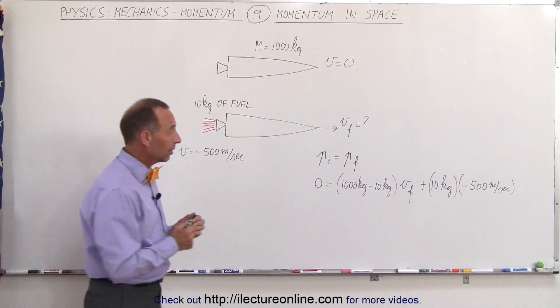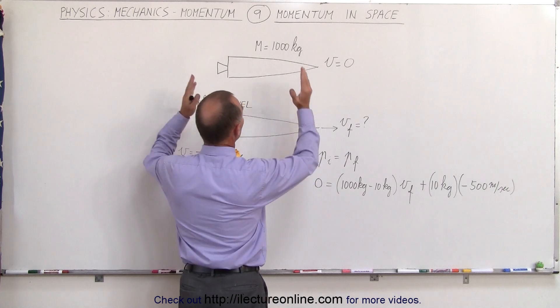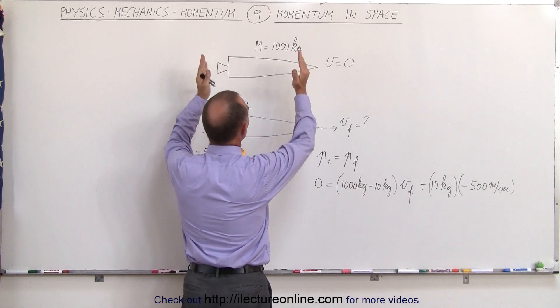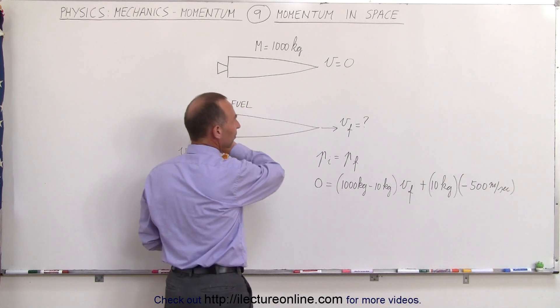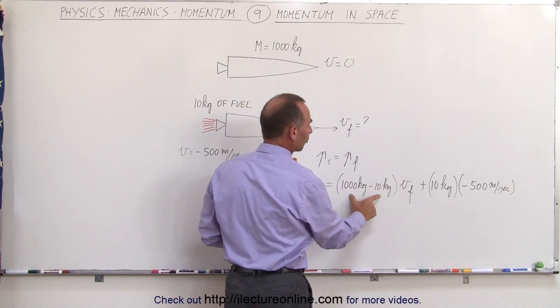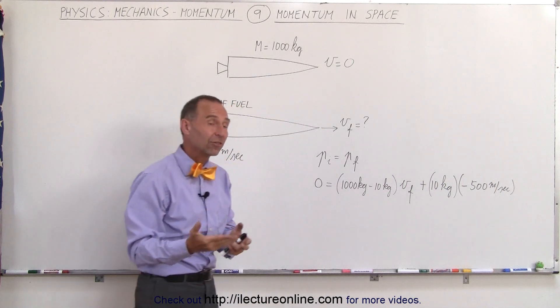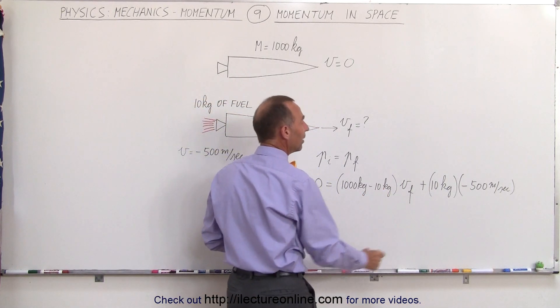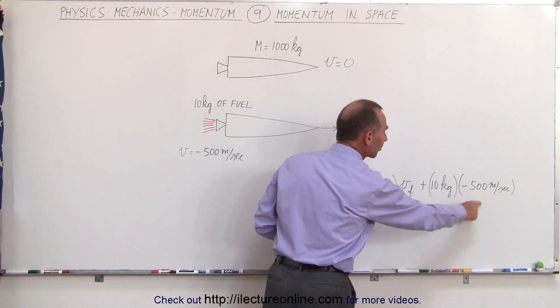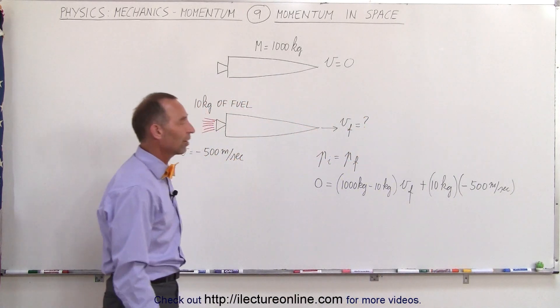So you can see here the initial momentum is zero, spaceship sitting there the mass of the spaceship including the fuel sitting at zero meters per second, then we have the spaceship being pushed forward which is the remainder of the spaceship, a thousand kilograms minus the mass of the fuel times its final velocity and the mass of the fuel moving in the negative direction at 500 meters per second.